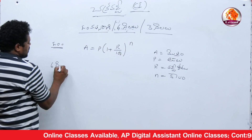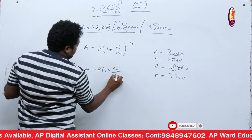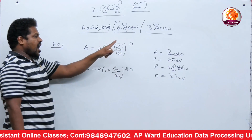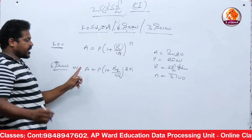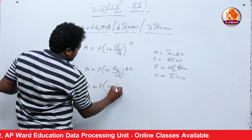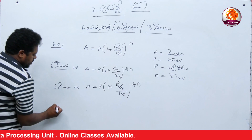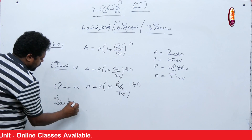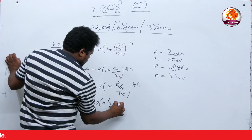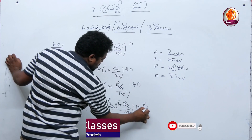If we have half-yearly, A is equal to P of 1 plus R by 2 by 100 all to the power 2N. R is the rate of interest. If quarterly, A is equal to P of 1 plus R by 4 by 100 all to the power 4N. For different rates of interest, A is equal to P of 1 plus R1 by 100 into 1 plus R2 by 100 into 1 plus R3 by 100 and so on.